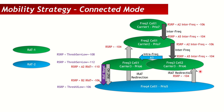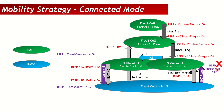For returning from the lower-priority RAT to the higher-priority one, IRAT reselection uses ThreshXHigh. If ThreshXHigh is set to -112, the UE returns when the higher-priority cell is above -112, but since A2 IRAT is -110, this triggers a ping-pong between the two RATs — which is very bad for KPIs and user experience. A better value like -106 — higher than both A2 IRAT and ThreshServingLow — avoids the ping-pong effect.